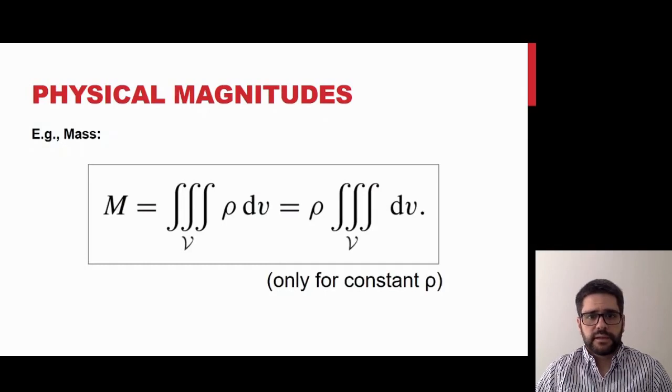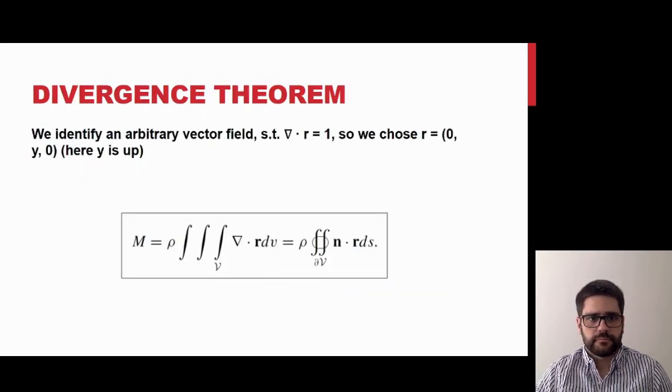For example, the mass can be computed as integral over the object volume of the mass density function. Using the divergence theorem, we can express the volume integral as a surface integral by identifying an arbitrary field with specific characteristics.